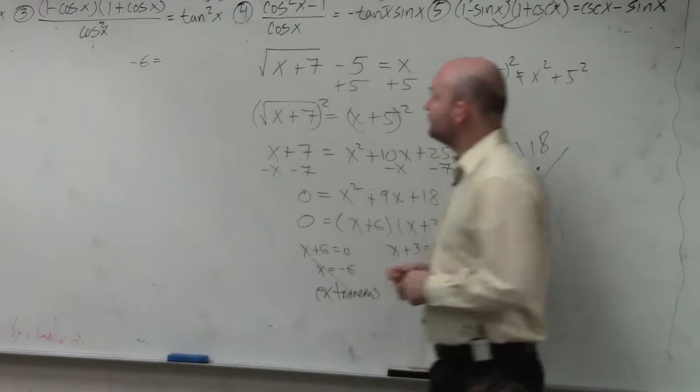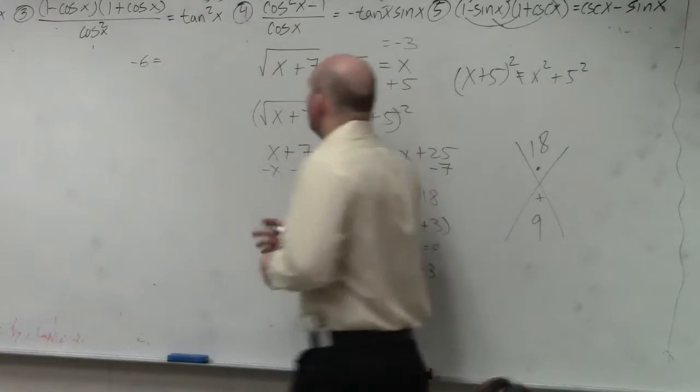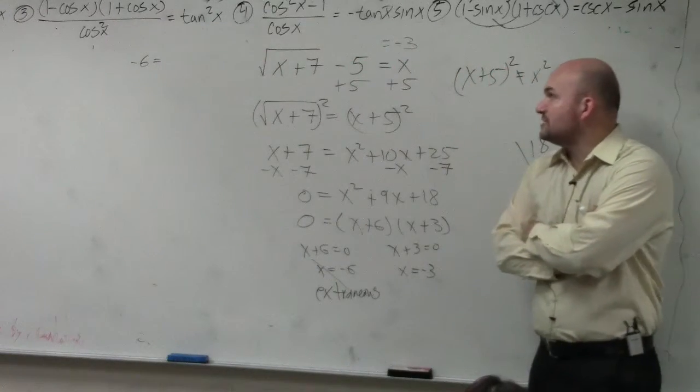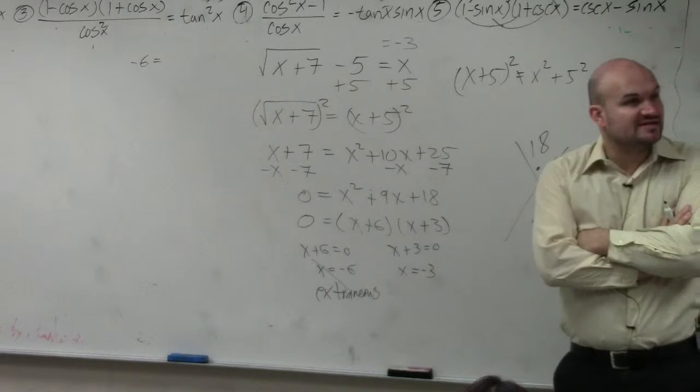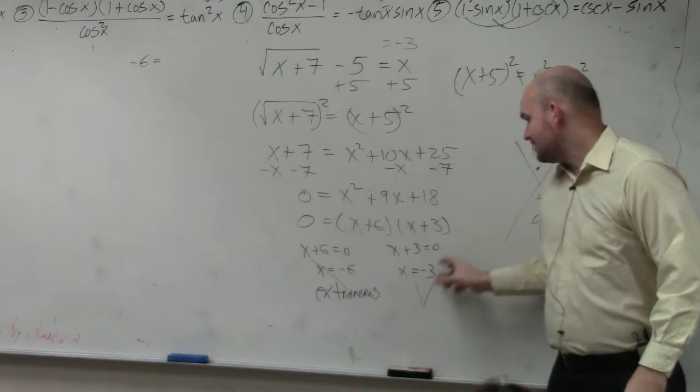Let's check negative 3. So now, when I plug this in, it has to equal negative 3. So negative 3 plus 7 is 4. Square root of 4 is 2. 2 minus 5 is negative 3. So this answer works.